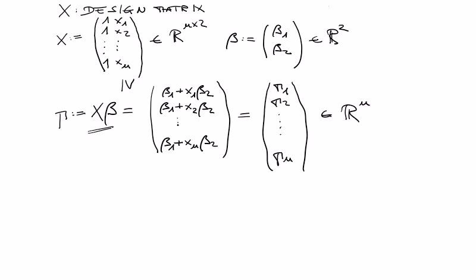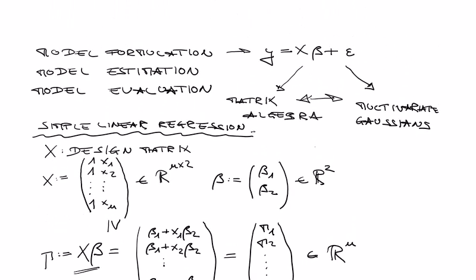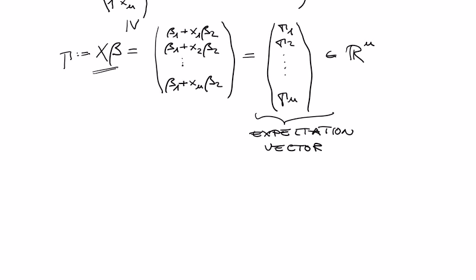We can call this the expectation vector of our GLM. Why it's called the expectation vector should become clear in a moment — before we bring it together with the epsilon term, which we haven't introduced yet.